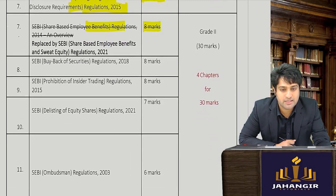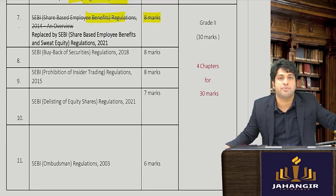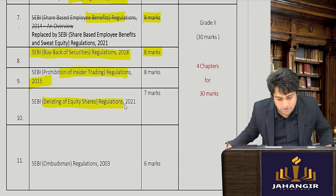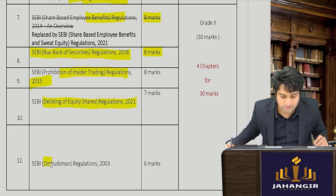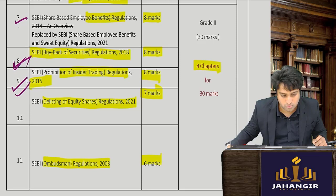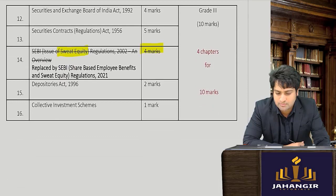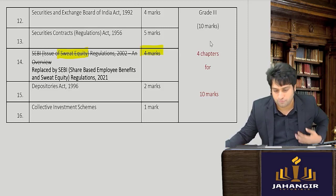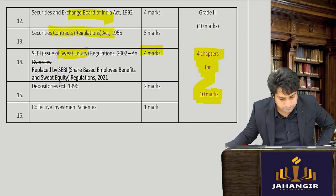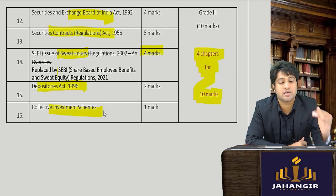Grade B chapters are relatively less important but still carry weightage: Buyback of Securities (8 marks), PIT Regulations — Insider Trading Regulations, Delisting (new 2021 regulations), and Ombudsman chapters. These four Grade B chapters collectively carry 30 marks. Grade C chapters — from which very basic questions are asked — include four chapters: SEBI, SCRA Act, Depositories Act, and CIS Scheme, with a combined exam weightage of 10 marks. This covers all 16 chapters of Securities Law.